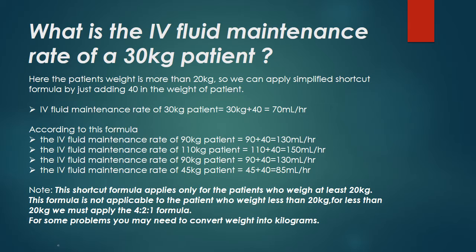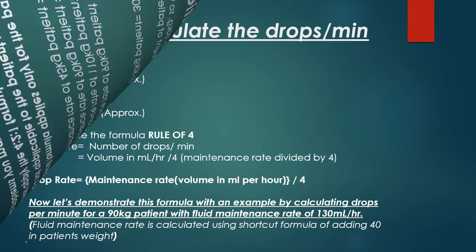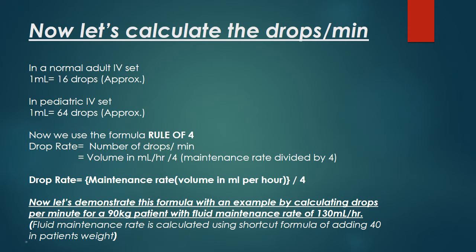For some problems you may need to convert weight into kilograms. Now let's calculate the drops per minute. In a normal adult intravenous set, 1 milliliter equals approximately 16 drops. In a pediatric intravenous set, 1 milliliter equals approximately 64 drops. Now we use the formula Rule of 4: drop rate equals volume in milliliters per hour divided by 4, giving drops per minute.